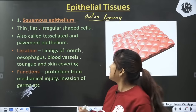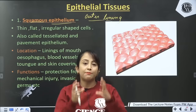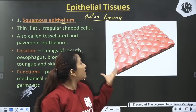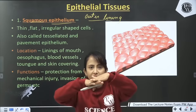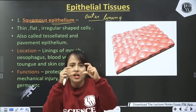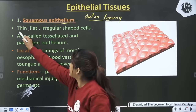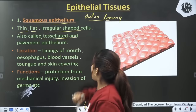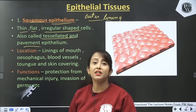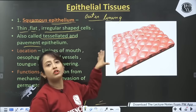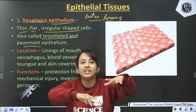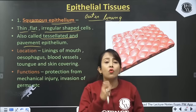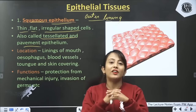The first type is squamous epithelium. These are irregularly shaped, flat cells — flat type cells. They are thin, flat and irregularly shaped cells. They are also called tessellated and pavement epithelium. When we see squamous epithelium, it looks like a floor — just like tiles or marble in your home. That tile-like appearance is why they are called pavement or tessellated epithelium.